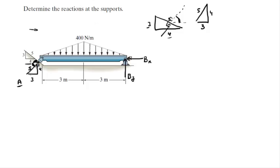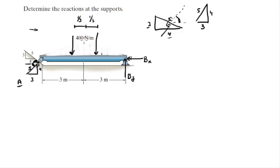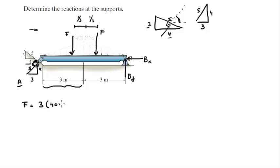Now you've got to replace the distributed loads with equivalent forces. You have this 400 N/m force, and I'm going to replace it with 2 forces because we have 2 triangles — a force here and a force here. The equivalent forces are located at 1/3 the length of the triangle from the tall edge. Let's call both forces F. To find the magnitude of F, calculate the area of the triangle: length times height divided by 2, which is 3 × 400 / 2 = 600 N.